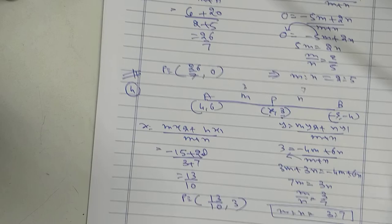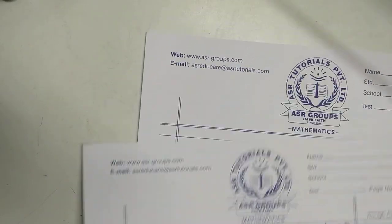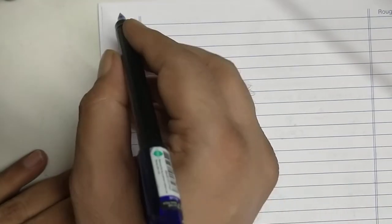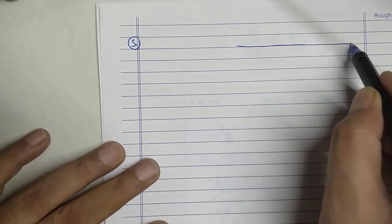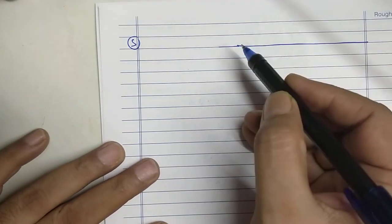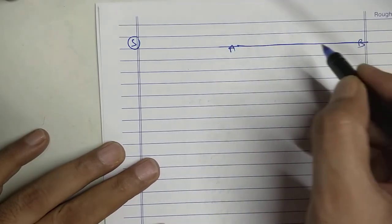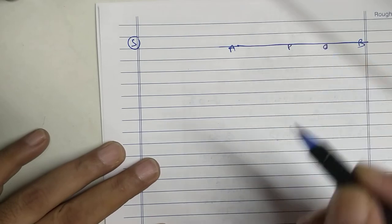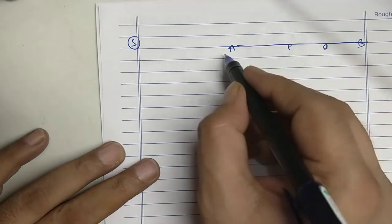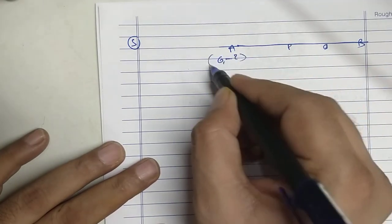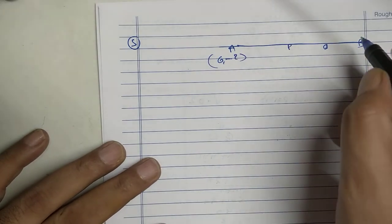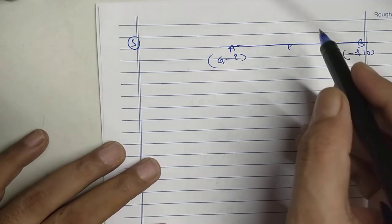Next sum. Sum number 5. Very big sum. A, B, P, Q. This is 6 comma minus 2. Minus 8 comma 10. Remember it. Trisect.